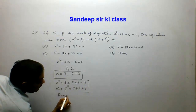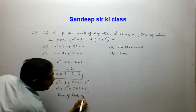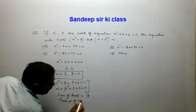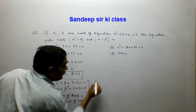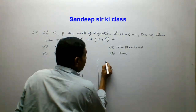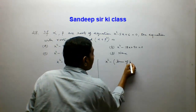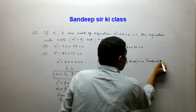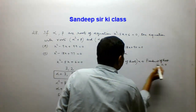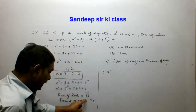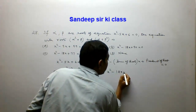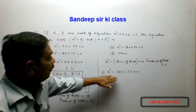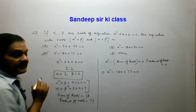Sum of the roots equals 11 plus 7 equals 18, and product of the roots equals 11 times 7 equals 77. The equation is x squared minus (sum of roots)x plus (product of roots) equals 0, which gives x squared minus 18x plus 77 equals 0. This is the required equation, and option C is the correct answer.